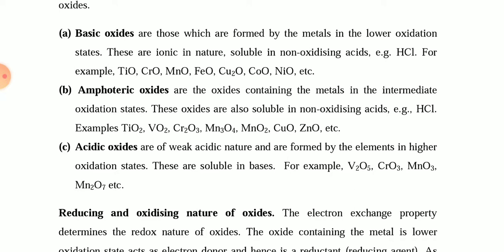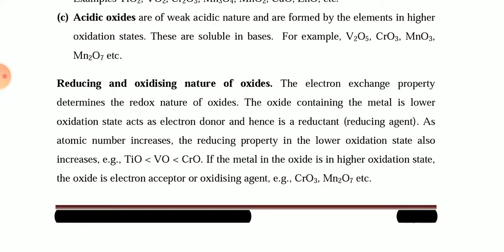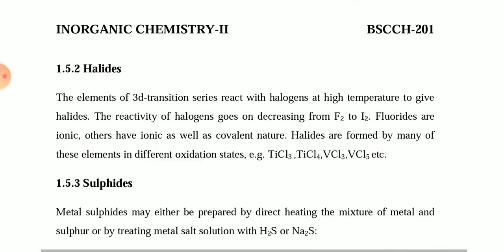Regarding the reducing and oxidizing nature of these oxides, the electron exchange property determines the redox nature. Oxides containing the metal in a lower oxidation state act as electron donors, hence they are reductants or reducing agents. As the atomic number increases, the reducing property in the lower oxidation state also increases. If the metal in the oxide is in a higher oxidation state, the oxide acts as an electron acceptor or oxidizing agent — for example, CrO₃ and Mn₂O₇ are oxidizing agents.